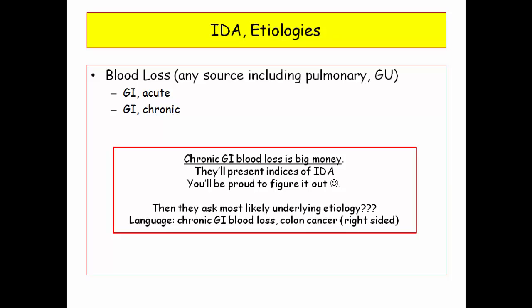They'll present indices of iron deficiency anemia, and then ask the most likely underlying etiology, using language such as chronic GI blood loss, or colon cancer — specifically right-sided. The cancer will be right-sided, as left-sided causes obstructive symptoms. The right side allows chronic undetected blood loss plus some weight loss. Anemia and weight loss — they love that. You'll need to note the anemia is iron deficiency to know they are talking about colon cancer. They can also do this in reverse: a patient with right-sided colon cancer is most likely to present with which of the following — iron deficiency will be one of the choices.